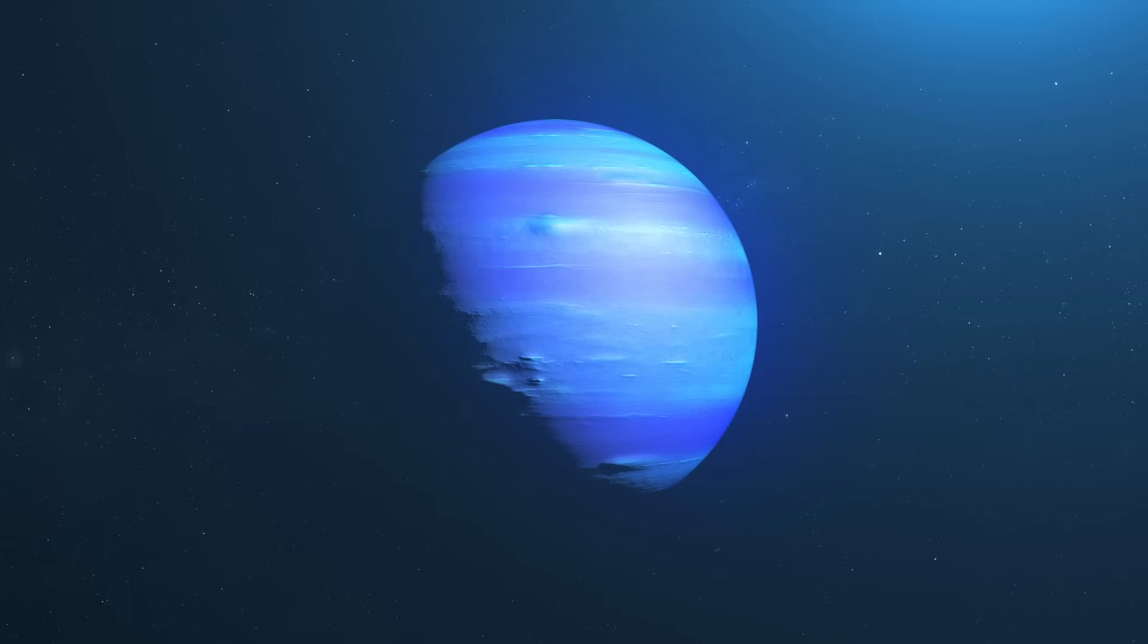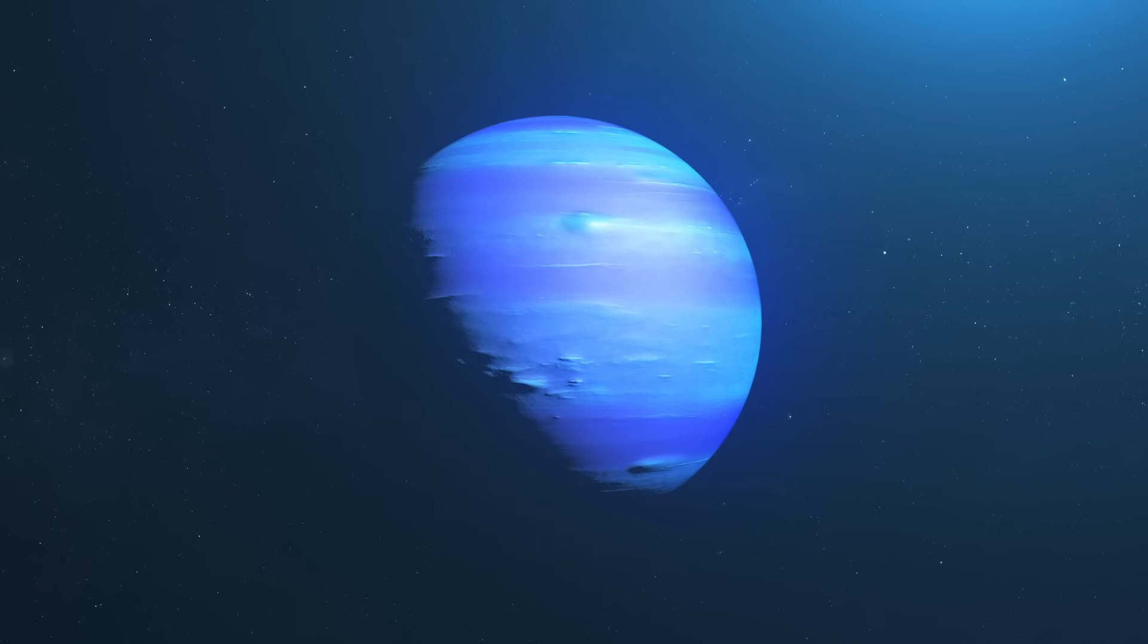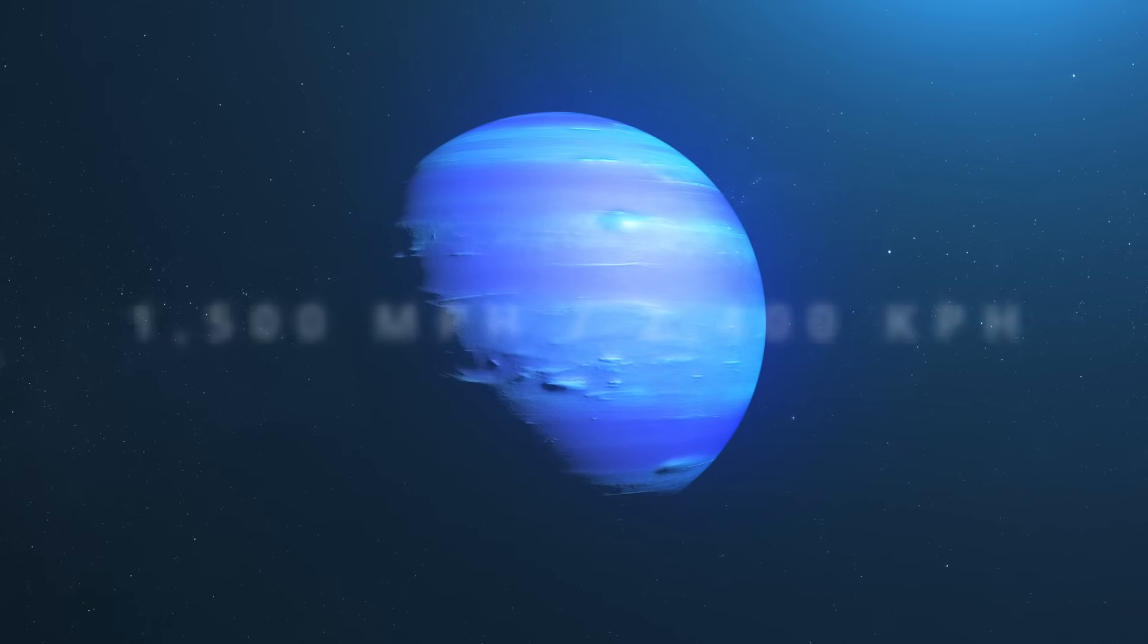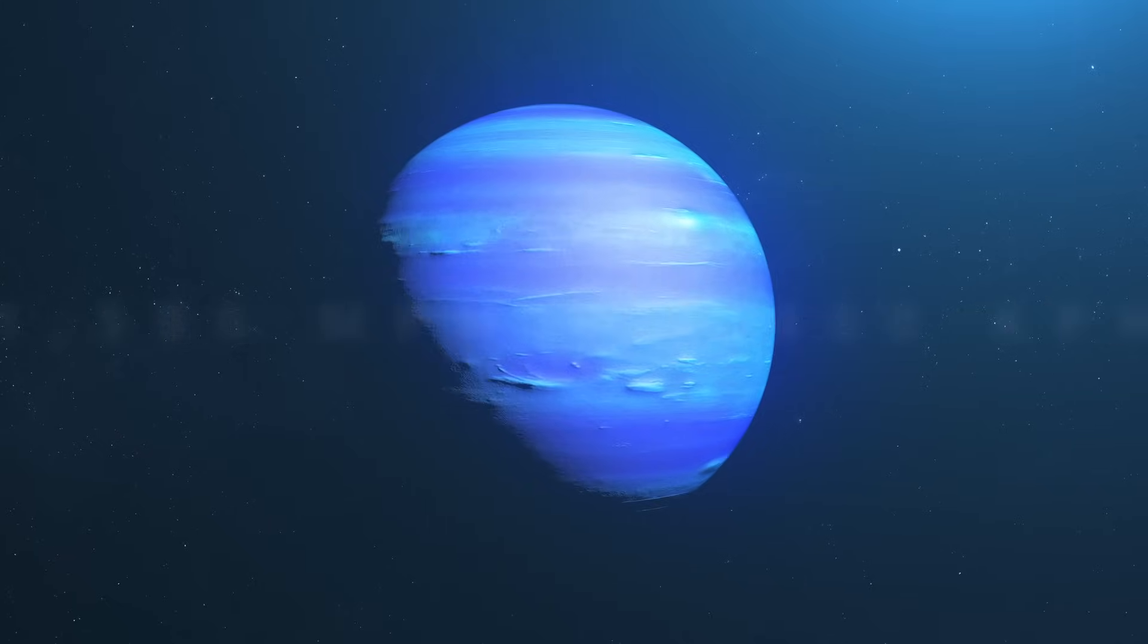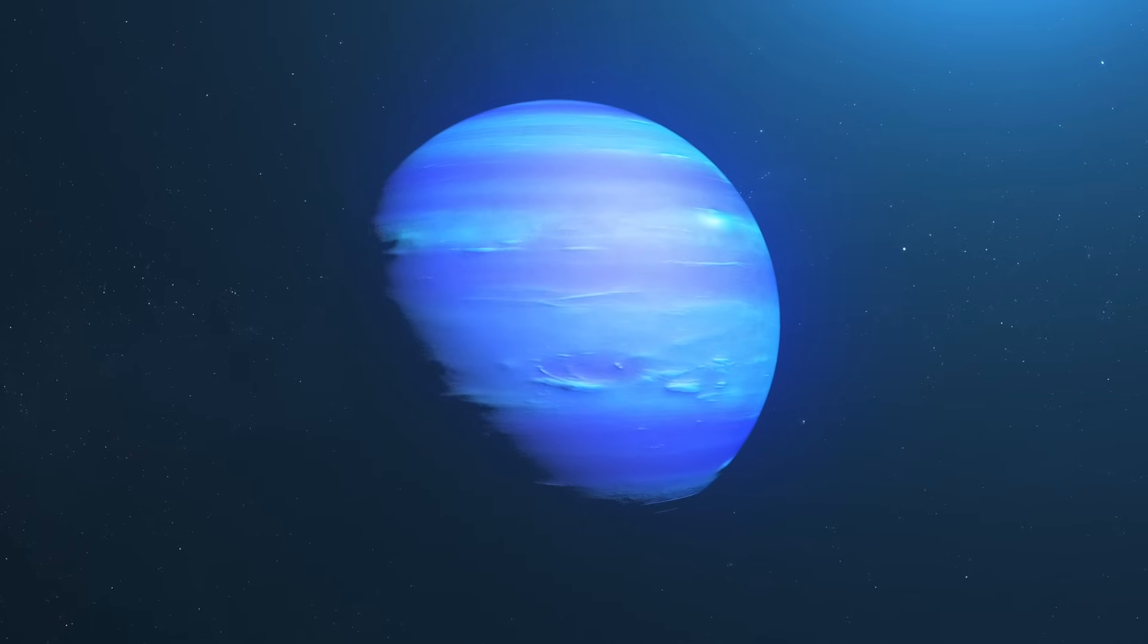Welcome to Neptune, where winds scream at supersonic speeds of up to 1,500 miles per hour, 2,400 kilometers per hour, the fastest ever detected in the solar system.